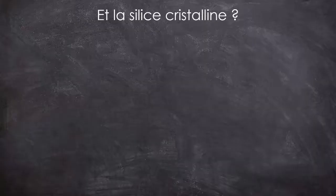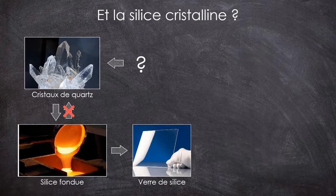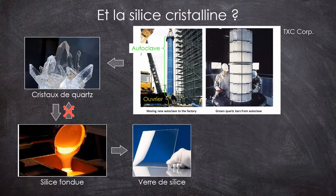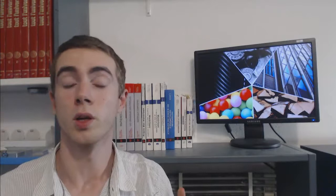Pour finir, peut-être que vous vous demandez comment est-ce qu'on peut obtenir de la silice cristalline, et donc du quartz, si la silice fondue devient systématiquement du verre à cause de sa viscosité. Eh bien, on passe par un procédé hydrothermal en autoclave, un peu comme dans la nature. C'est un procédé très lent, où il faut entre 1 et 6 mois pour obtenir un cristal. Heureusement, la consommation mondiale de quartz synthétique n'est pas énorme. C'est là-dessus qu'on va terminer cet épisode sur les verres, dont on aura bien sûr l'occasion de reparler. Je vous remercie d'avoir suivi cette vidéo, en espérant que vous ayez appris des choses. À la prochaine.